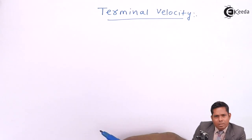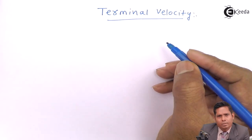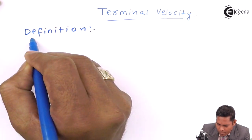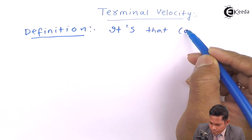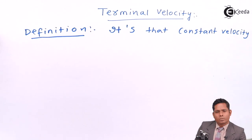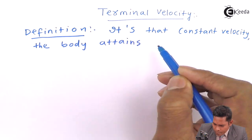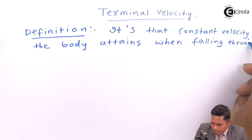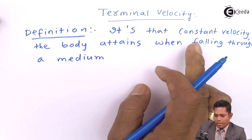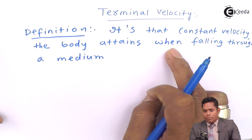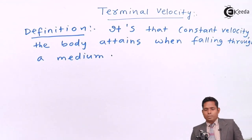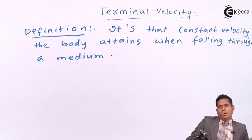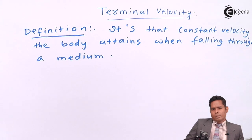The definition of terminal velocity: it is that constant velocity the body attains when falling through a medium. As soon as you release the body, it will not immediately attain terminal velocity — it will take some time. At the moment of release, the velocity is zero. Gradually the velocity increases, and afterwards the terminal velocity is reached.